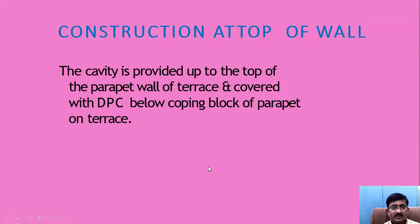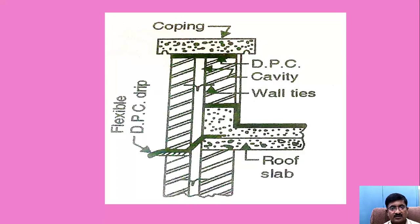Construction at the top of wall: the cavity is provided up to the top of the parapet wall of the terrace and covered with the DPC below the coping block of the parapet on the terrace. This is the terrace slab and this is the parapet wall — inner leaf and outer leaf. A flexible material is sometimes used for moisture resistance, coping is provided, and below the coping the damp proof course is provided. The cavity is maintained and strengthened by providing metal ties.